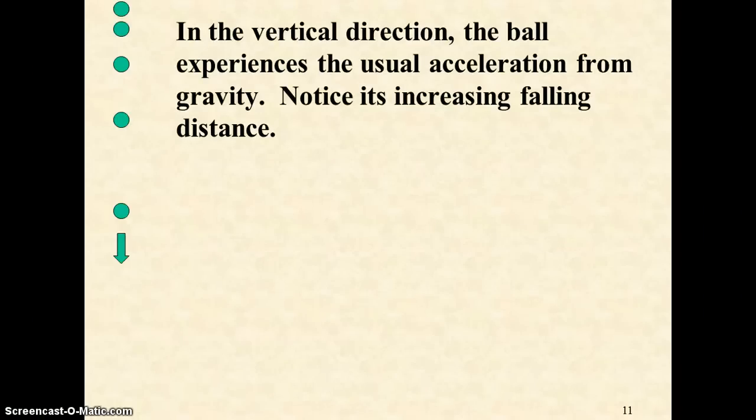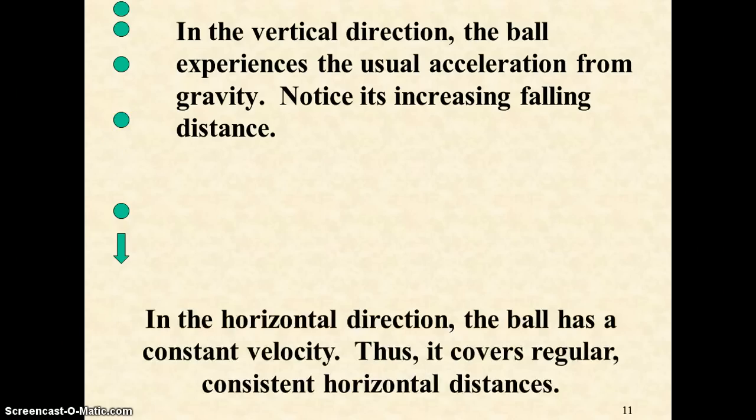Here's another way to view it. If you break up the motion into two pieces, you see that vertically, the distance gets larger and larger as it picks up speed downward due to gravity. In the horizontal direction, notice there are equal spacings because the velocity sideways, or in the X direction, is constant.